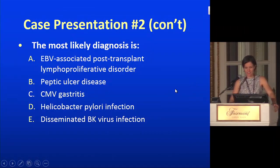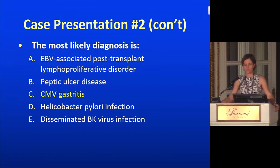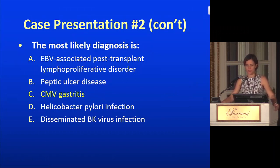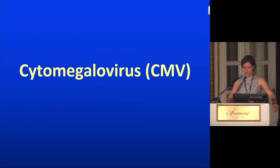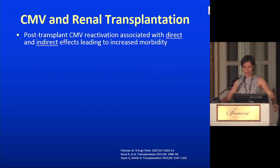Everybody correctly identified CMV. CMV is the most important infection after renal transplant, or any solid organ transplant. Peptic ulcer disease and H. pylori often cause ulcers in the duodenum — the story here mostly fits with CMV. Let's talk about CMV.